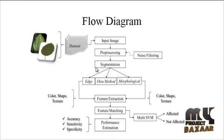After the noise filtering, the segmentation is done. The segmentation is mainly used to extract the affected regions. Here, three types of segmentation are used to extract the affected regions. First of all, the first one is edge detection. Then, the second one is the Otsu method. Then, the third one is the morphological method.